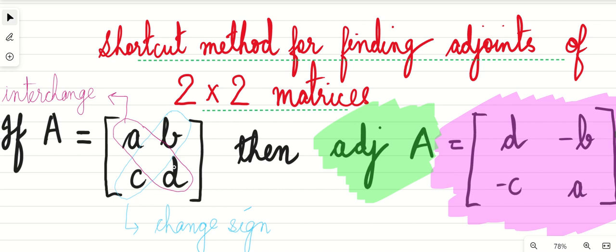Now the other two elements, b and c, will change their sign. Here c was positive, so it became negative. B was positive, so it became negative. If b was negative, it would have become positive. So the first element and the element diagonal to it will interchange, and the rest of the two elements will change their sign.